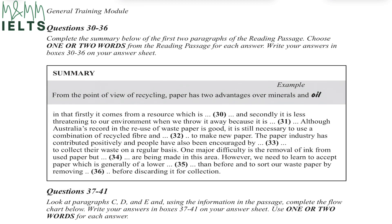If we look at the question first, it says: complete the summary below of the first two paragraphs of the reading passage. Choose one or two words from the reading passage for each answer, and write your answers in boxes 30 to 36 on an answer sheet. So we always need to read the question first — the answer can only be one word or a maximum of two words. They've given us a paragraph with a few blanks, which is a summary of the passages above. The words we pick must come from the paragraphs themselves; we cannot use synonyms or our own words. We may need to change the sequence or paraphrase to find which word fits best, but we must pick from the paragraphs.